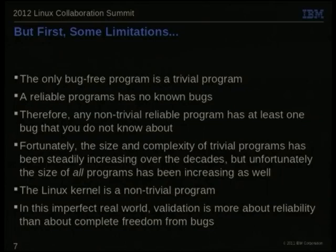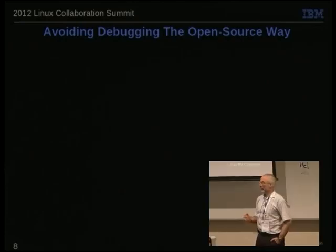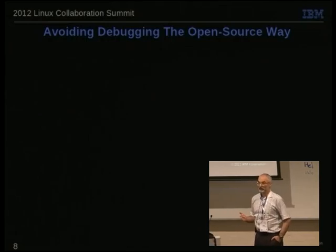In this imperfect world, validation is more about reliability than about perfection and total freedom from bugs. Let's start with the open source way of avoiding bugs — this was a real surprise for me. I've spent most of my career as a proprietary programmer, and open source is much more effective than I would have expected.